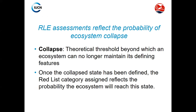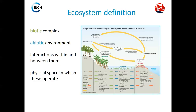The first thing is defining what collapse is — that theoretical threshold beyond which an ecosystem can no longer maintain its defining features. Once we have defined what collapse is, the whole Red List of Ecosystem category and methodology reflects the probability of reaching that state. There is a lot of discussion that can be opened when discussing what an ecosystem is. The Red List of Ecosystem methodology proposes a very basic, open, and broad definition: an ecosystem is a complex of biotic elements, abiotic environments, the interactions among all of them, and a physical space that they actually operate and occupy.